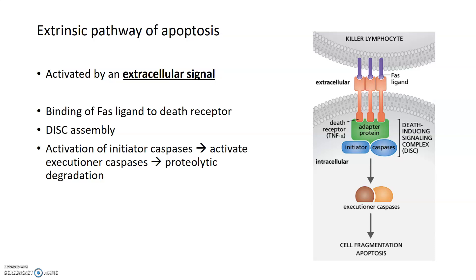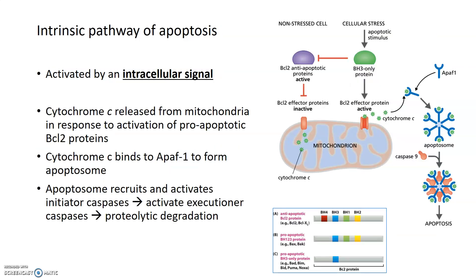The signal to die can also be activated intracellularly through a family of proteins known as the BCL2 proteins. There are both anti-apoptotic and pro-apoptotic BCL2 family members. In a normal cell that is not undergoing apoptosis, BCL2 — an anti-apoptotic protein — is active. It prevents the formation of channels in the mitochondria that would allow cytochrome c to be released from the inner mitochondrial membrane.